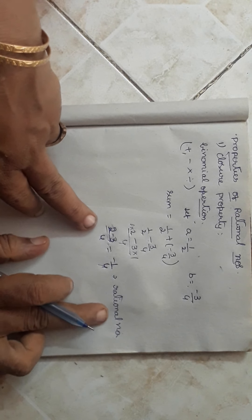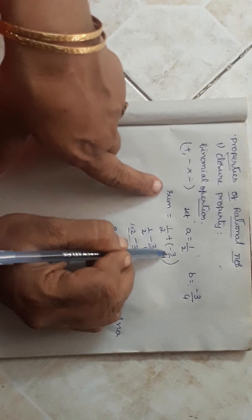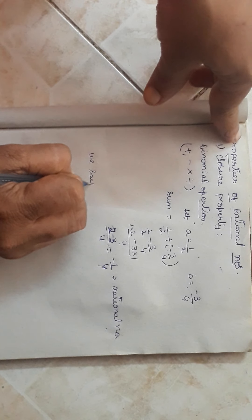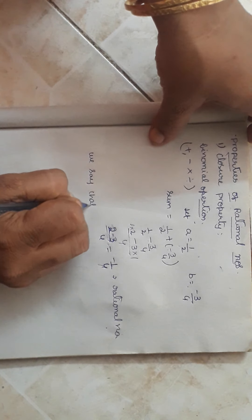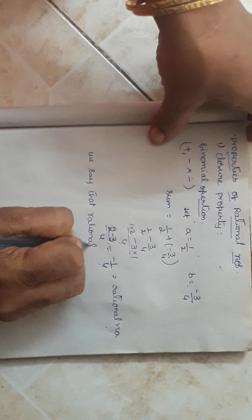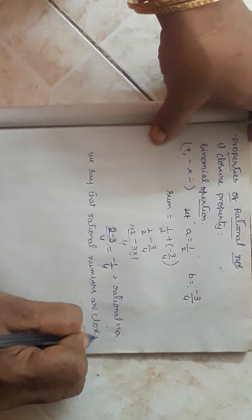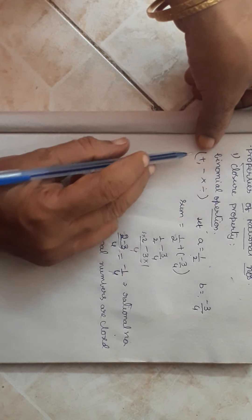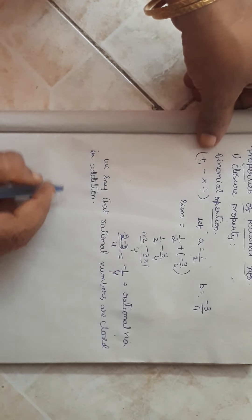Now minus 1 by 4 is also a rational number. We took a as a rational number and b as a rational number, we found the sum, and that sum is also a rational number. So in general we say that rational numbers are closed under addition. The closure property under addition is applicable in the set of rational numbers.